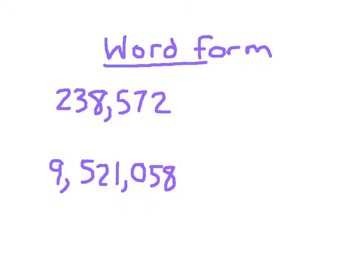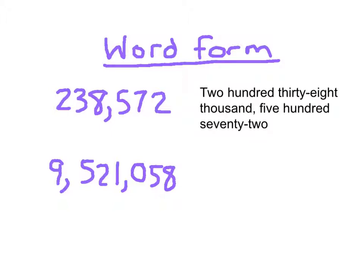The word form of a number is just the words of what we would say for each of these numbers. So this first number, 238,572, the word form is just the words: two hundred thirty-eight thousand, five hundred seventy-two. As you see, I've written it out — 238, which was that period, thousand, because that was the thousands period, five hundred seventy-two.